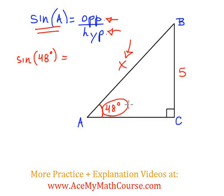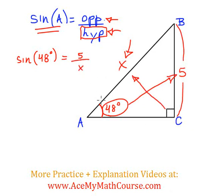What is the opposite to angle A? The opposite side is this side over here which measures 5. And what is the hypotenuse? The hypotenuse is always opposite to the 90 degree angle. In this case, that's x.